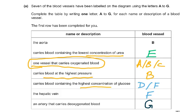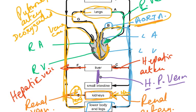The vessel carrying the highest concentration of glucose is D (hepatic portal vein) or F (hepatic vein). Glucose comes from digesting food in the small intestine — absorbed into the blood, the hepatic portal vein carries it to the liver. So after a meal, D or F would have the highest glucose concentration.